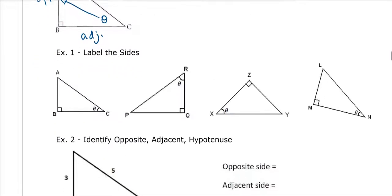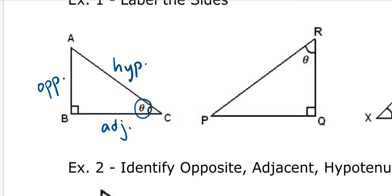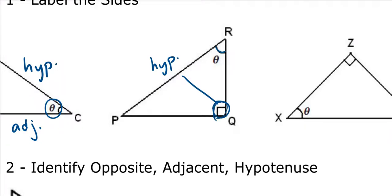Let's do some examples and label the sides. With the reference angle down here on the bottom right corner, my hypotenuse is up here. The adjacent side is the side beside the angle, right beside the angle. The opposite side is across from the reference angle. What if the reference angle is up here? My hypotenuse is still the longest side. Another way to remember the hypotenuse is that it's opposite the 90-degree angle, and we'll never consider the 90-degree angle as our reference angle.